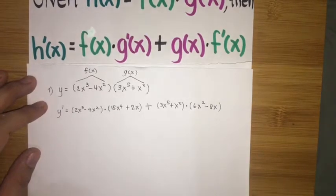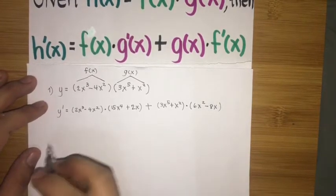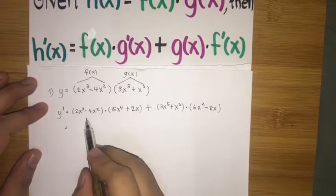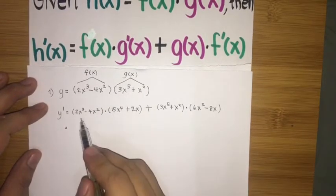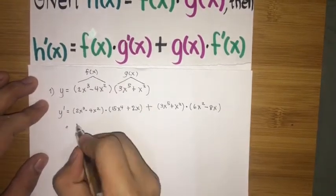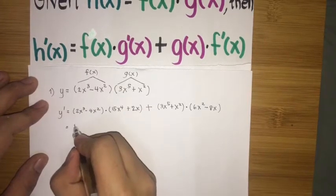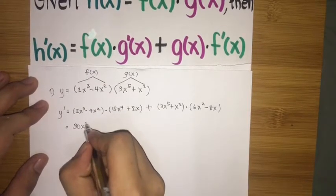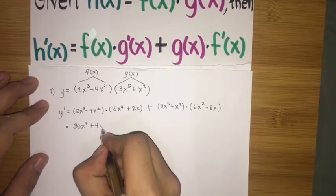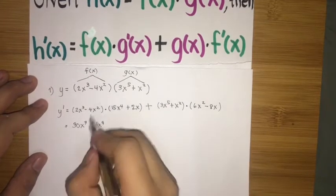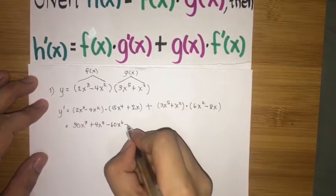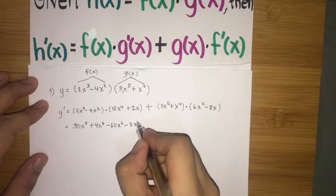We're done with the differentiation, so now we just perform the simplification. We can multiply these two binomials using the FOIL method, giving us: 30x to the seventh plus 4x to the fourth minus 60x to the sixth minus 8x cubed.